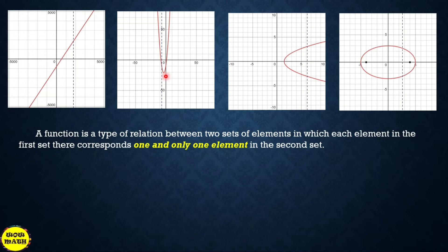Kung babalikan natin, a function is a type of relation between two sets of elements in which each element in the first set may correspond one and only one element in the second set. Like for example, this one, if we're going to check our x value, it corresponds to only one y value.